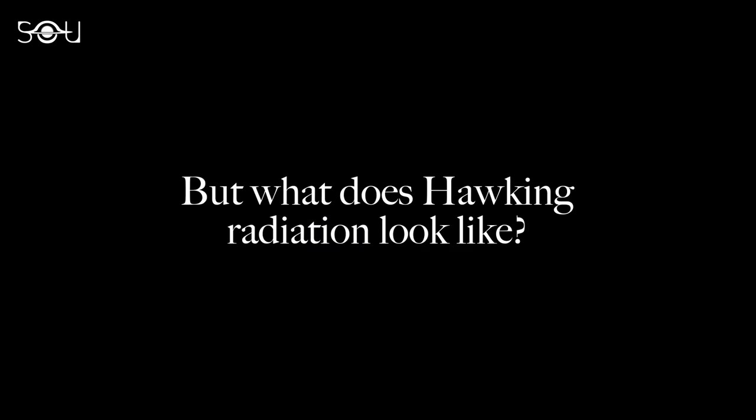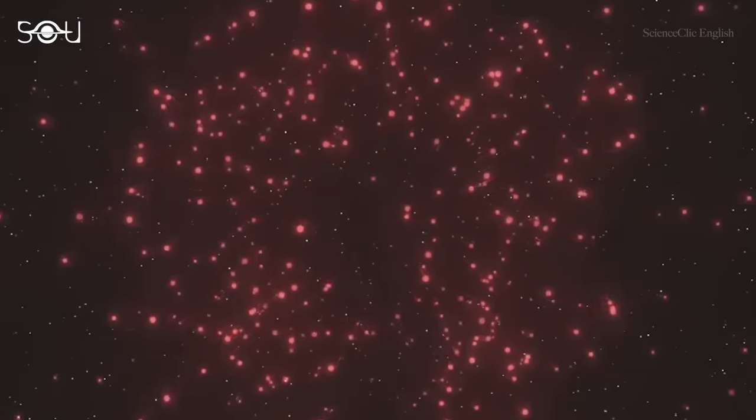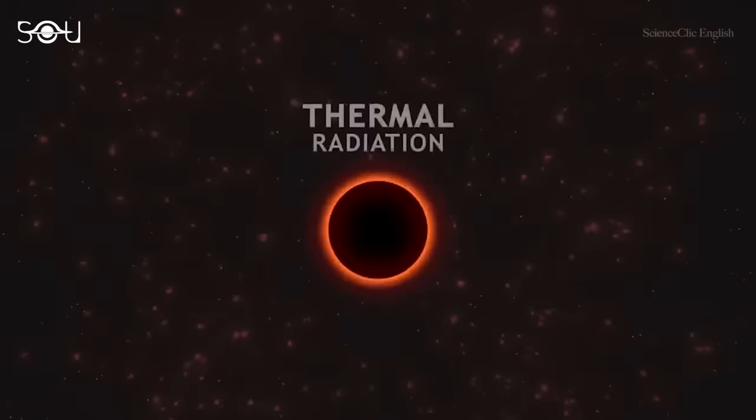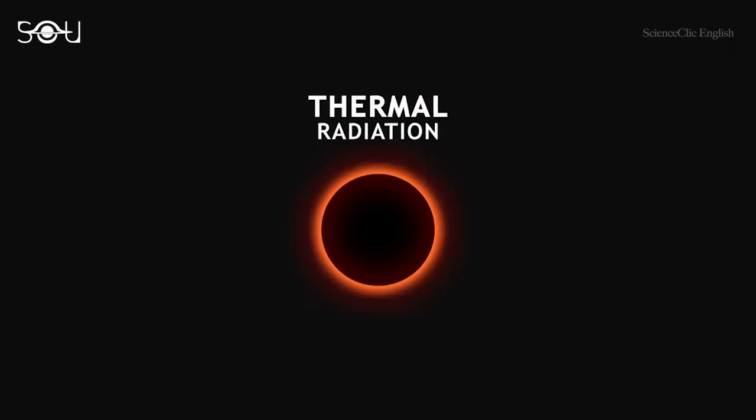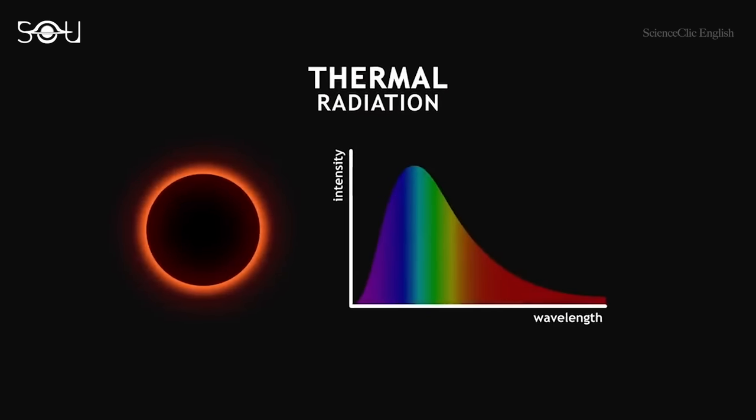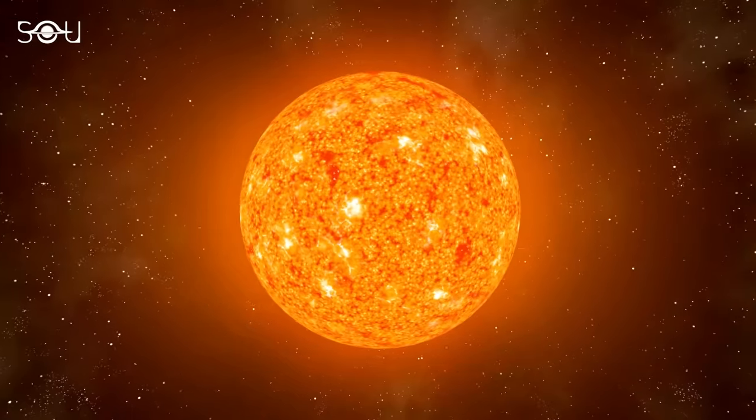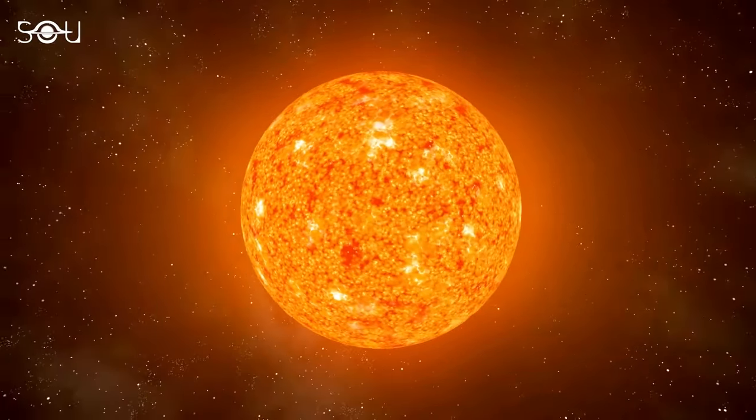To understand what the researchers did, it's important to know the nature of Hawking radiation in the first place. So what does it look like? Hawking radiation acts like black body radiation with a Planck spectrum, meaning the nature of thermal radiation being emitted by the black hole is similar to the radiation coming from a star.